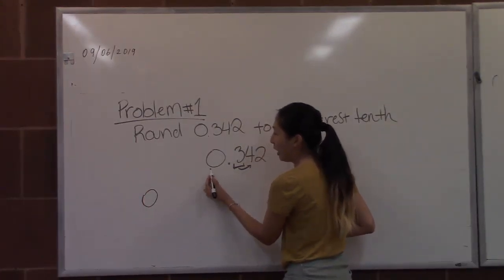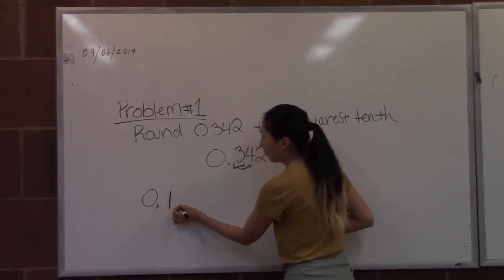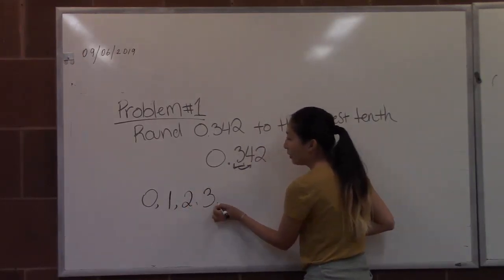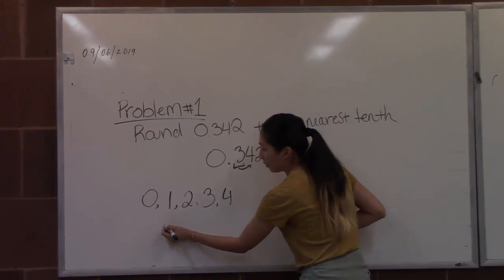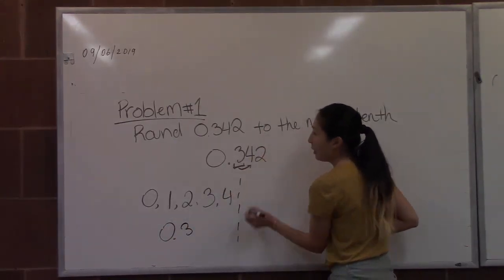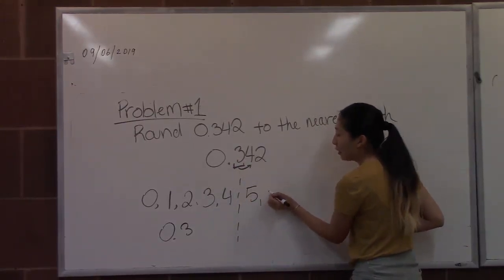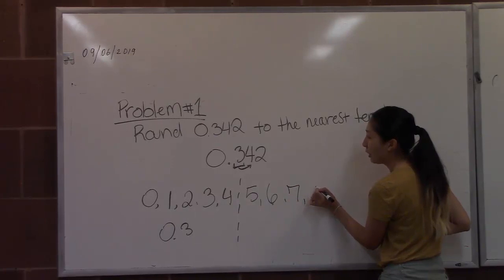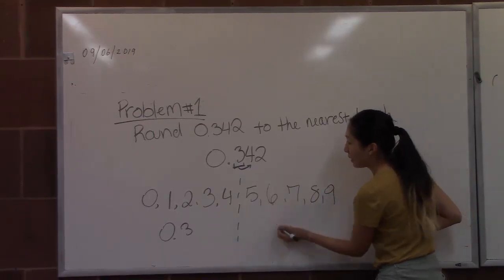For example, if the number is 0.30, 0.31, 0.32, 0.33, or 0.34, we keep it the same. But if the number is 0.35, 0.36, 0.37, 0.38, or 0.39, we'll round this number up. So the answer will be 0.4.